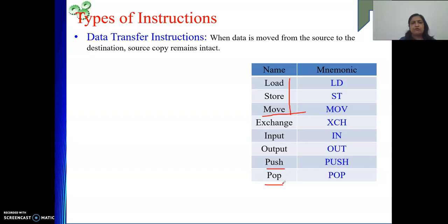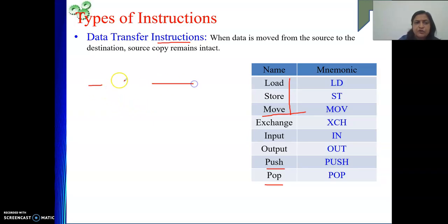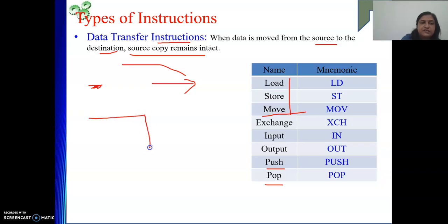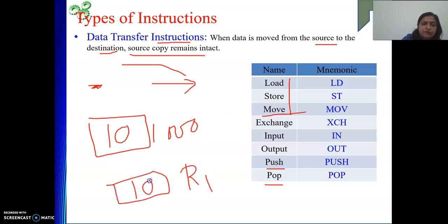One important point: though the name is data transfer instruction, in English 'transfer' means moving from one location to another — the original is no longer there. But in our case, data transfer instruction means the data will be moved from source to destination, but the copy at source will remain as it is — source copy remains intact. For example, if memory location 1000 holds value 10 and I bring it to processor register R1, R1 will also hold value 10, but the value at memory location 1000 is not destroyed.